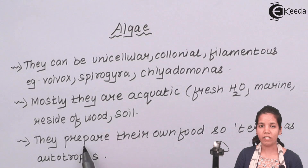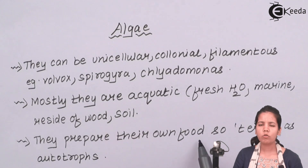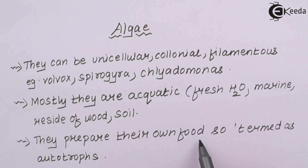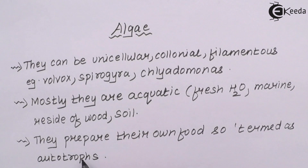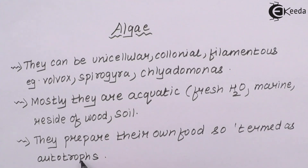Algae, being green in colour, prepare their own food. But if an algae is red in colour, how does it prepare its food? We will be studying that in detail. The algae that is green in colour and can prepare its own food is basically autotrophic — meaning they can prepare their own food.